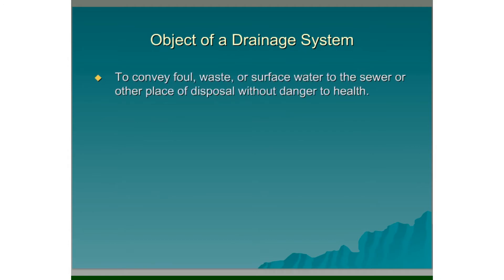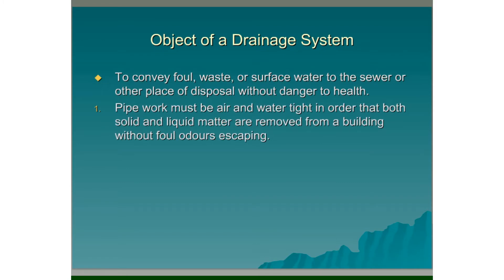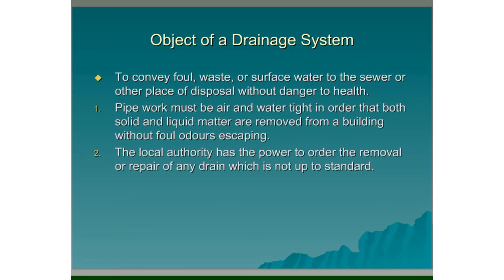The object of a drainage system is to convey foul waste or surface water to the sewer or other place of disposal without danger to health. Pipework must be air and water tight in order that both solid and liquid matter are removed from the building without foul odours escaping. The local authority has the power to order the removal or repair of any drain which is not up to standard.